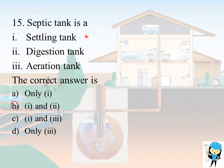A septic tank is a settling tank, a digestion tank, and an aeration tank. The correct answer is that a septic tank is not an aeration tank since it is a closed system. Therefore, it is both a settling tank and a digestion tank, so the correct answer is options 1 and 2.